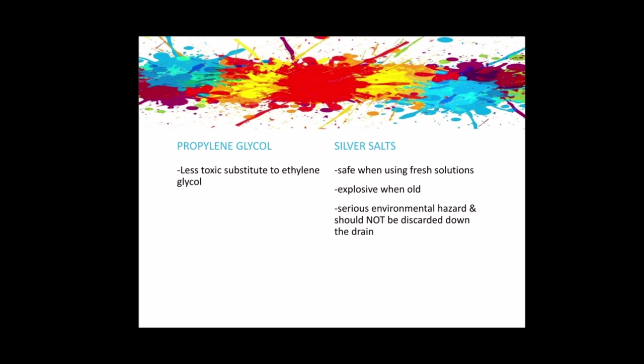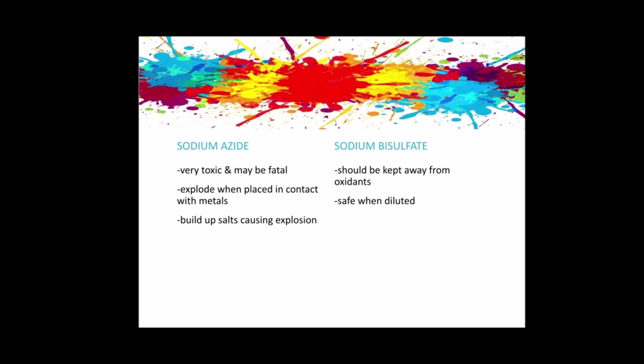Propylene glycol is a less toxic substance for ethylene-based ethers. Silver salts are relatively safe when used as a fresh solution, but can be explosive when the solution becomes old. They can irritate eyes and skin and cause severe gastrointestinal discomfort if ingested, and are a serious environmental hazard — they should not be discarded down the drain. Sodium azide is very toxic and may be fatal when swallowed or absorbed through the skin, or when mixed with acids. It can explode when placed in contact with metals and should not be discarded down the drain, as buildup of salts can also cause explosion.